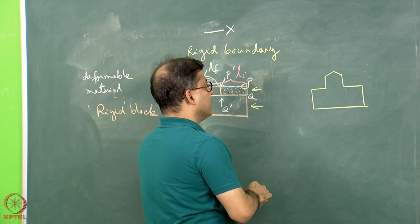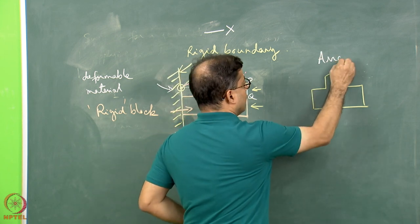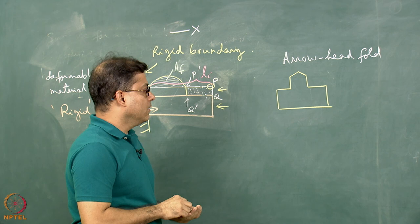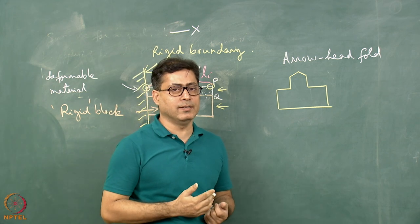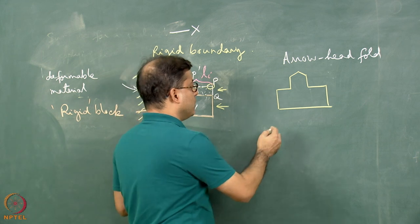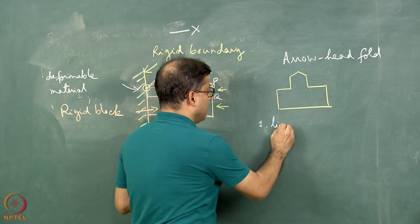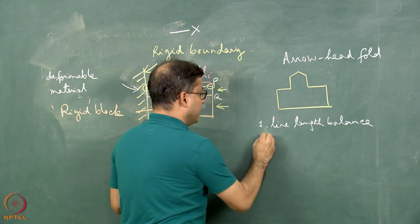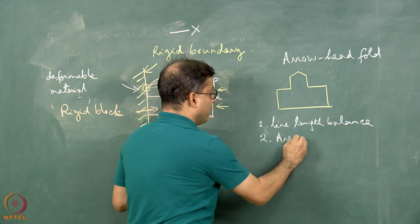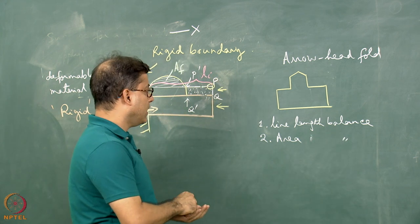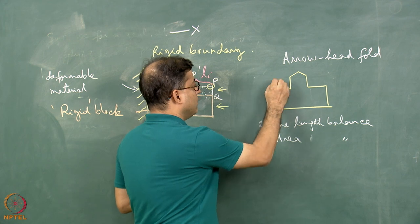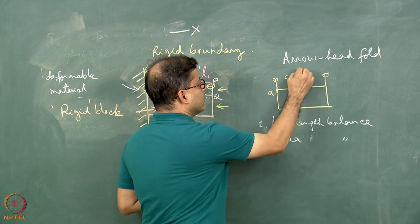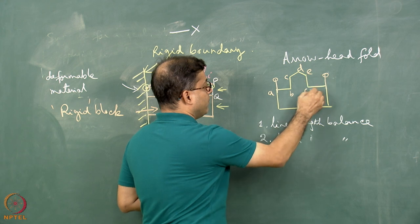This fold geometry we can call as an arrowhead fold, because it looks like an arrow. If we want to find out how much is the shortening and those strain parameters, how to proceed — there can be two approaches. One can be the line length balance and the second one can be the area balance. If it is line length balance, I can consider the pin line over here and over there, and I have to calculate the length AB plus BC plus CD plus DE plus EF plus FG.